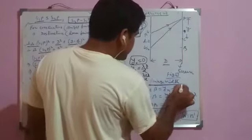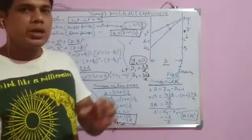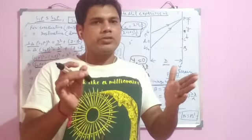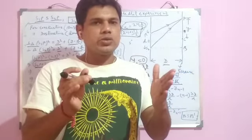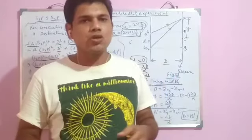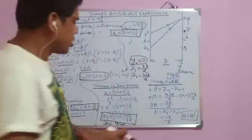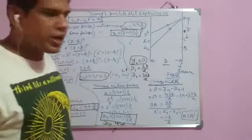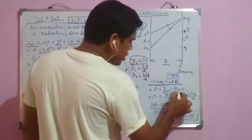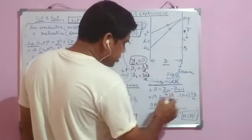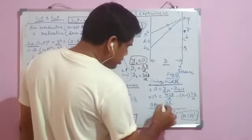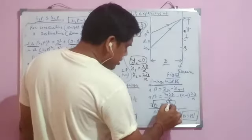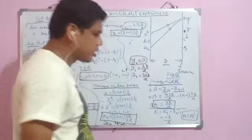Fringe width is defined as the distance between two consecutive bright fringes or dark fringes. For bright fringes, if it is denoted by β, then β = YN − Y(N−1). Substituting the formula, we get β = λD/d, where λ is the wavelength, D is the slit-to-screen distance, and d is the slit separation.